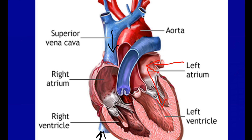The left ventricle pumps blood into the aorta through the aortic valve, also called the aortic semilunar valve. That valve, when closed shut after blood is pumped into it, will not allow blood back into the left ventricle. This is when the coronary arteries actually receive blood flow — that's after systole, during diastole.